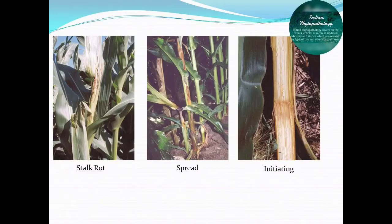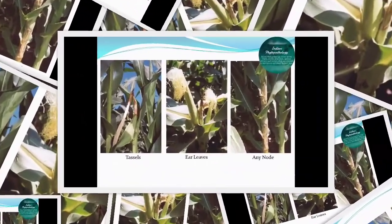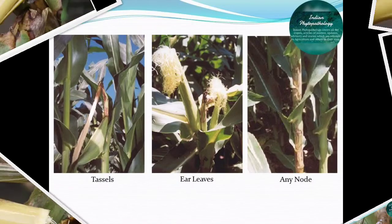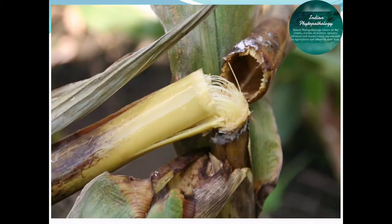Here you can see in the images that the basal portion and inner portion of this maize crop is completely broken down, and there is a mild fermenting odor. If you break the main stalk, you can see and smell the mild fermenting odor accompanying the rotting inside the infected portion.